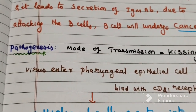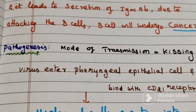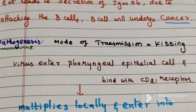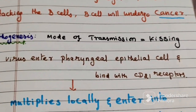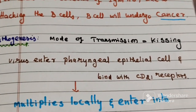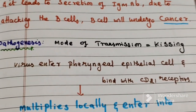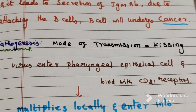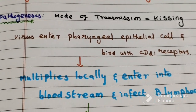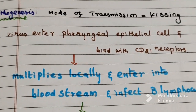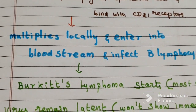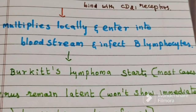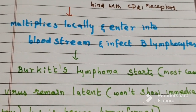Pathogenesis: How does Epstein-Barr virus attack B-cells? The main mode of transmission is kissing. The virus enters the pharyngeal epithelial cells through the mouth, then binds with the CD21 receptor. It multiplies locally, then enters the bloodstream and infects B-lymphocytes. This is where Burkitt's Lymphoma starts. In most cases, this virus remains latent inside the lymphocytes and won't show immediate symptoms.